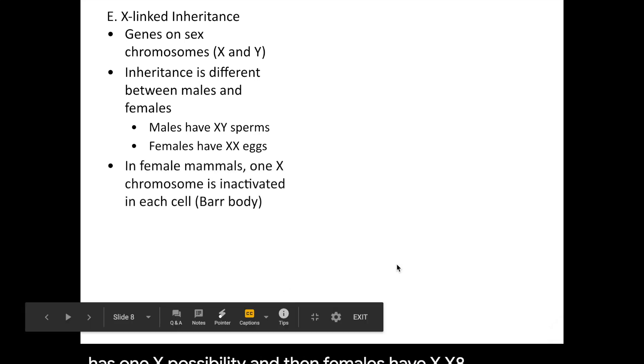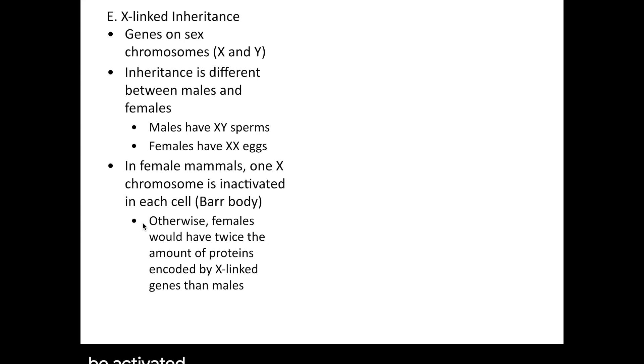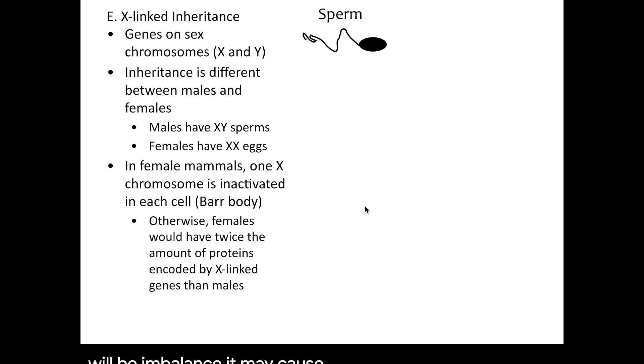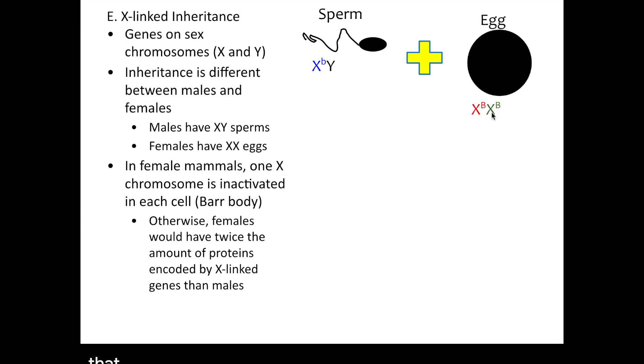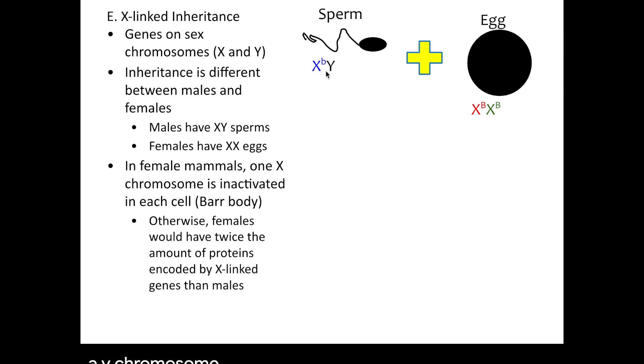In X-linked inheritance, X-linked means genes located on sex chromosomes, in particular the X chromosome. The inheritance is different between males and females mainly because males have XY, so they only have one X chromosome possibility. Females have XX, giving them two possible X alleles. In female mammals, one X chromosome is inactivated in each cell, because if both X chromosomes were activated, females would have twice the amount of proteins encoded by X-linked genes compared to males, which would cause imbalance and possibly mutations.